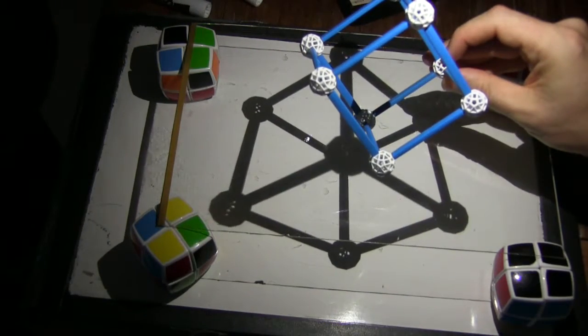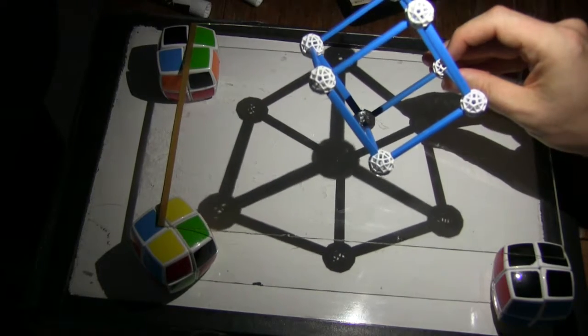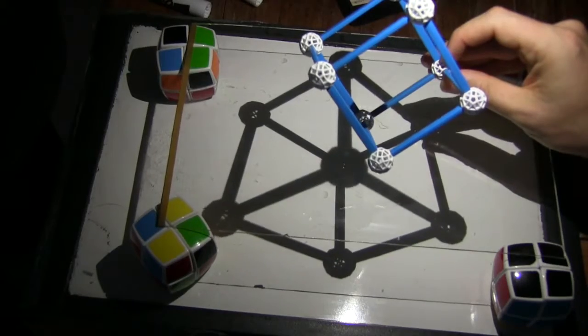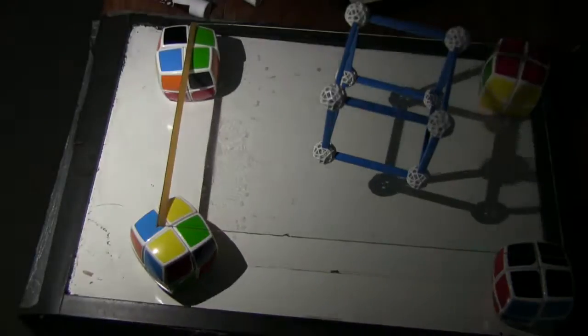There we are. So now it looks like a hexagon with lines coming to the middle. Is that obviously a shadow of a cube? No. Not obviously at all. So why don't you give your brother the light.